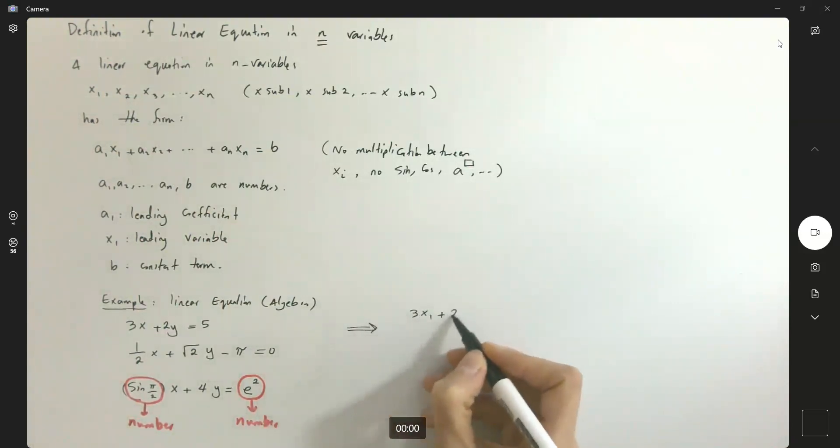3x sub 1 plus 2x sub 2 equals 5. Or 1.5x sub 1 plus square root of 2x sub 2 minus pi equal to 0. Or we can write sine of pi over 2 times x sub 1 plus 4 times x sub 2 equals to e to power 2.